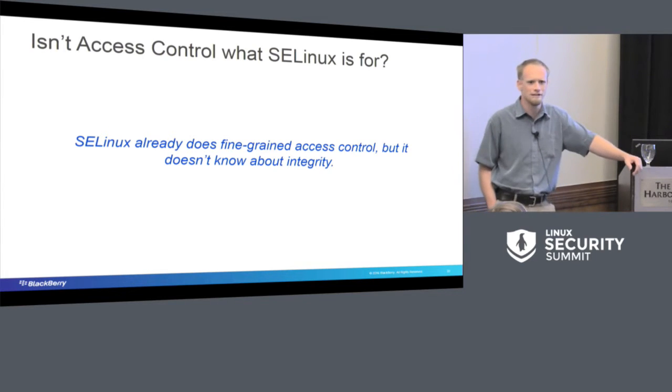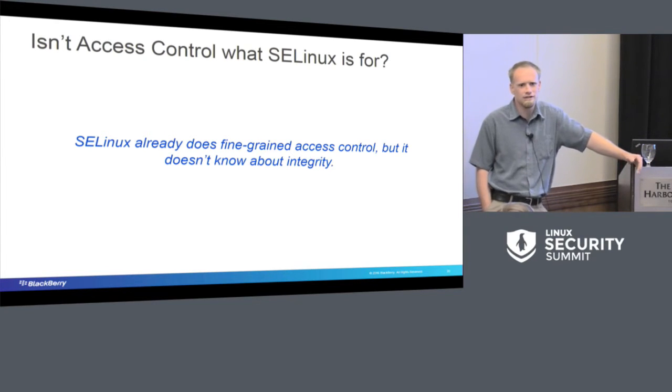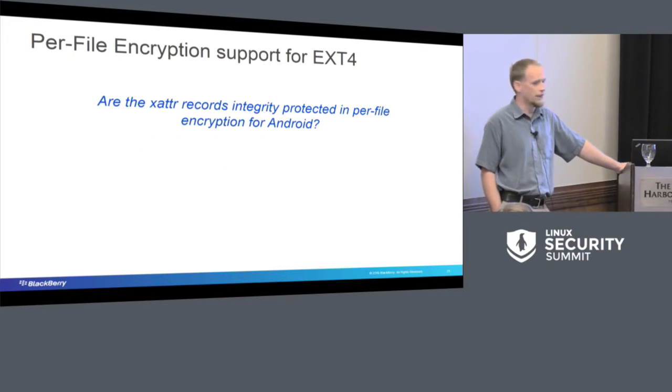All PathTrust does is stop a privileged application from invoking, in this case, we're going to call it attacker-provided code. Wait a second. Isn't access control what SE Linux is already for? If we're going to try and stop someone from doing something, that sounds like access control. And yes, it is. But SE Linux doesn't know anything about the underlying file system that the labels are on. It assumes that the labels are good.